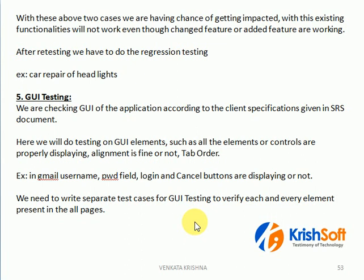We also verify tab order. If the first tab goes to the first element and the next tab jumps to the last element, that is also a bug. These things we need to verify in GUI testing. It is also a very important interview question. We write separate GUI test cases for each and every element. Once we get the application, we execute those test cases on it.